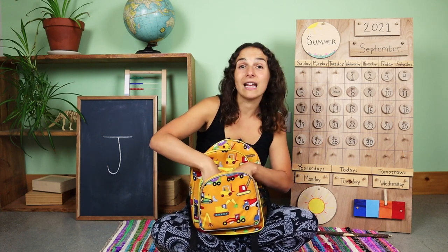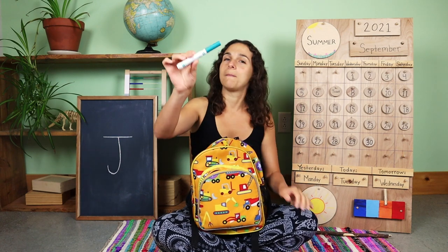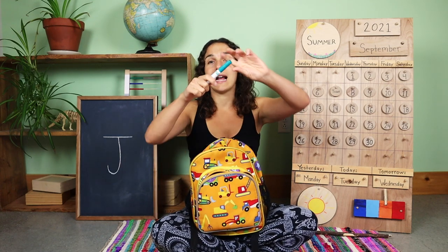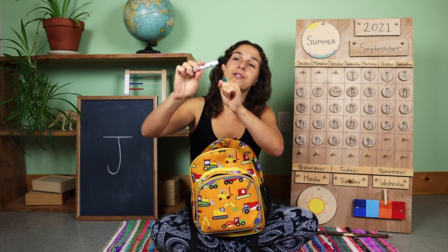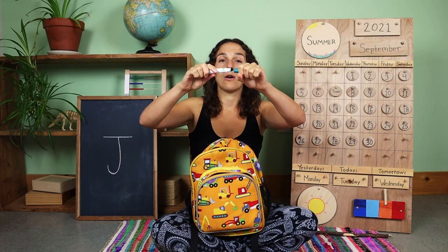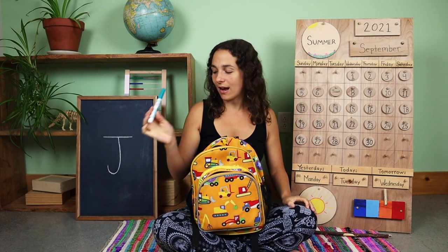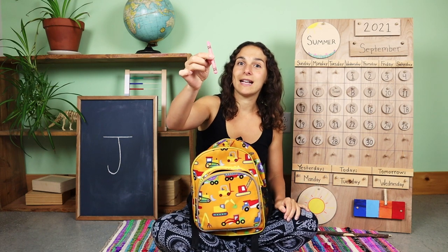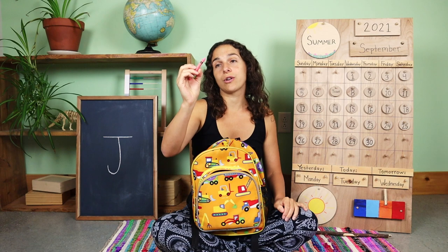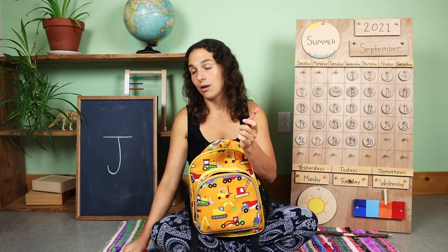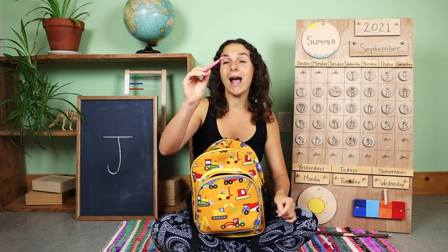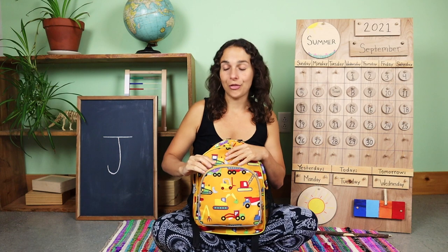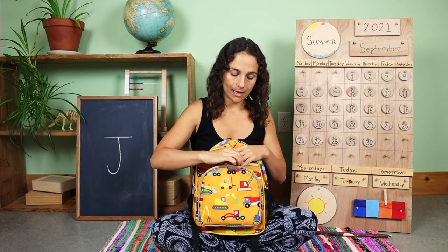Over on this side of the pocket, it looks like I have some tools that are used for coloring. This is a marker. A marker is similar to a pen because it has a top on it. When I pull it off, there's a tip with ink inside of it, and I always have to remember to put the top back on so the ink doesn't dry out. The last thing that I have is a crayon. A crayon is also used for coloring, but unlike a pen or a marker, a crayon is made out of wax and then has a paper covering on the outside. Let's put the crayon back, the marker back, the pen, and the pencil.